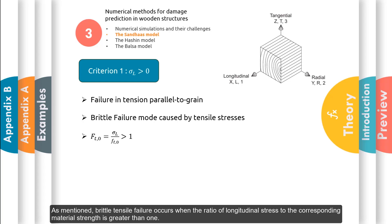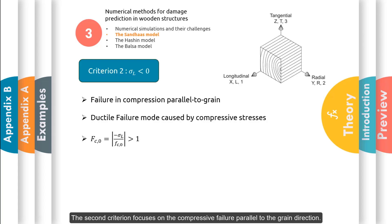As mentioned, brittle tensile failure occurs when the ratio of longitudinal stress to the corresponding material strength is greater than 1. The second criterion focuses on the compressive failure parallel to the grain direction.